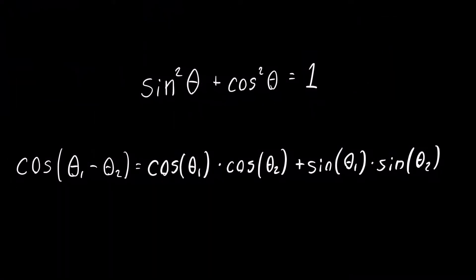Here are the two trig identities. It's just the classic Pythagorean trig identity, which says that sine squared theta plus cosine squared theta is equal to 1. Then the cosine subtraction formula, which says that cosine of theta 1 minus theta 2 is equal to cosine theta 1 times cosine theta 2 plus sine of theta 1 times sine of theta 2.